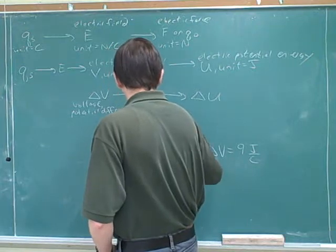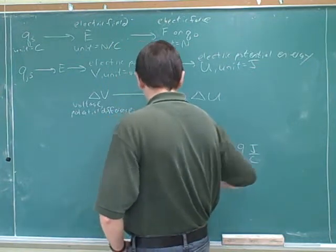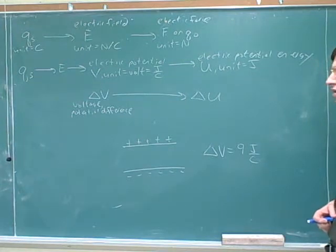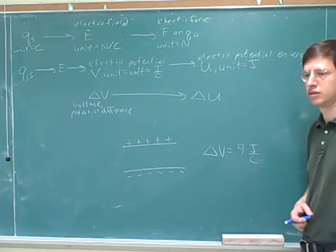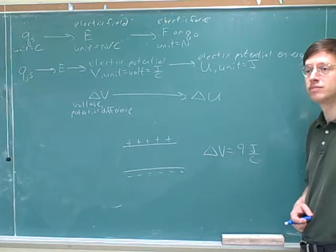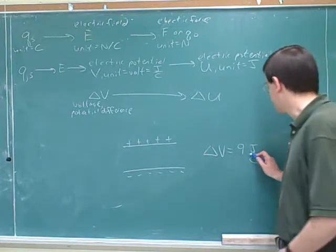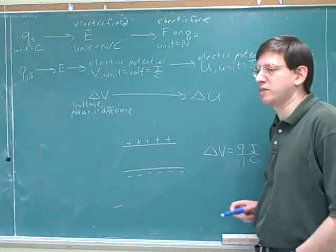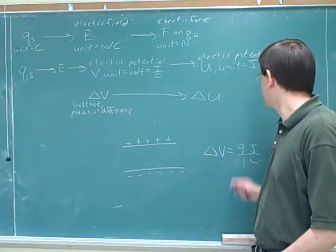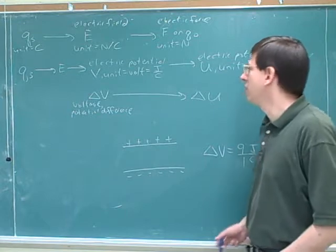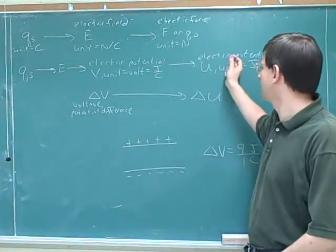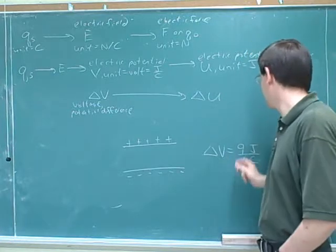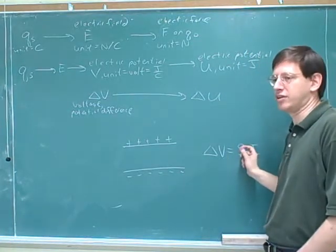A capacitor is something that has a separation of charges. This would say that if we move a one coulomb charge between the plates, its potential energy would change by 9 joules. Notice that potential determines the level of energy, but potential difference determines the change in energy. So this is telling us about a 9 joule change in energy.